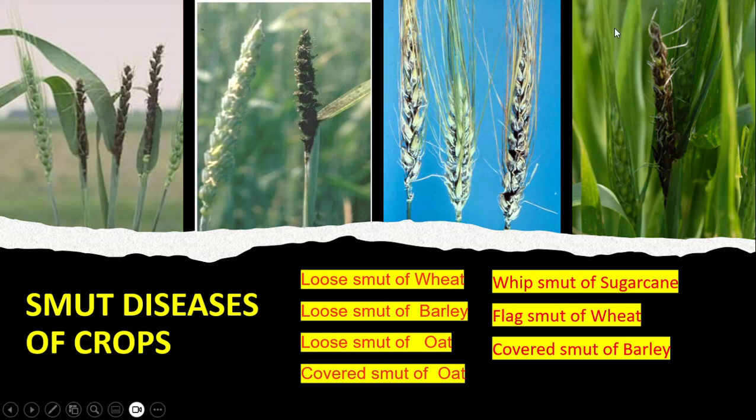Today we'll talk about smut diseases of crop plants. These include loose smut of wheat, barley, and oats; covered smut of oats and barley; whip smut of sugarcane; and flag smut of wheat. These are very important diseases of cereal crops and graminaceous crops.